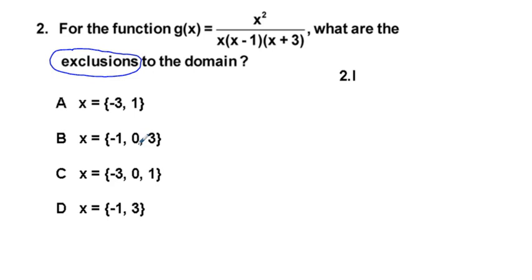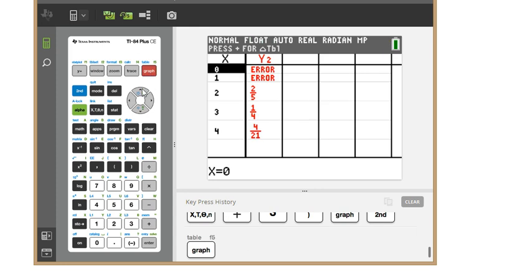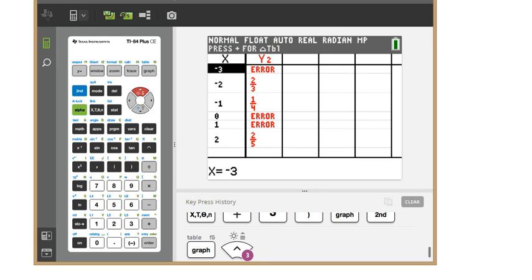Looking at the answer choices, we eliminate those without −3 and 1. By appearances answer A seems correct from the vertical asymptotes, but not so fast — there is one exclusion to the domain that is unseen using the graphing calculator. Going to the table view, we see an error at x = −3, at x = 1, and also at x = 0. That x = 0 is a removable discontinuity — a hole or point discontinuity.